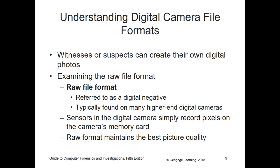Witnesses or suspects can create their own digital photos, so learning every file format isn't necessarily critical since individuals can create their own formats. The raw file format (.raw) is referred to as a digital negative, typically found on higher-end cameras. The sensors simply record pixels on the camera's memory card. The raw format maintains the best picture quality, but it takes up significant space.